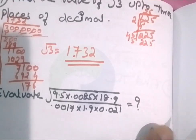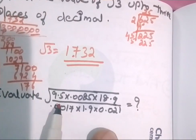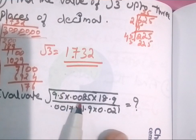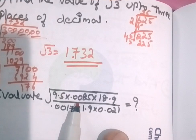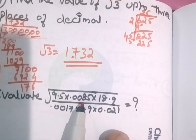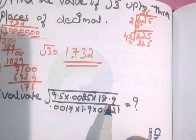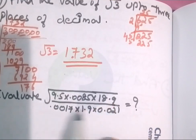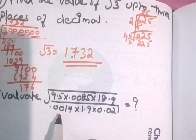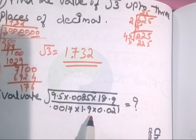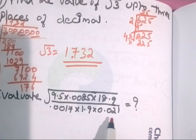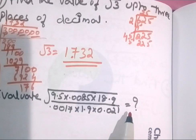Evaluate: 9.5 into 0.0085 into 18.9, divided by 0.0017 into 1.9 into 0.021.